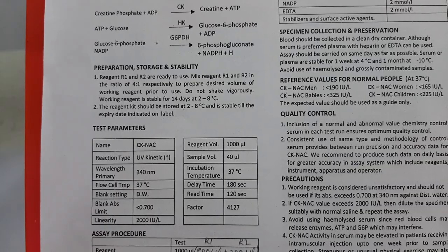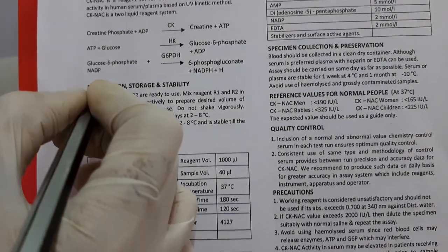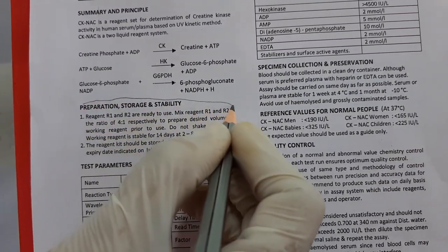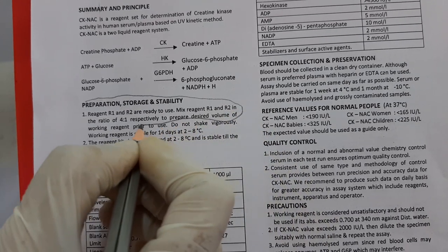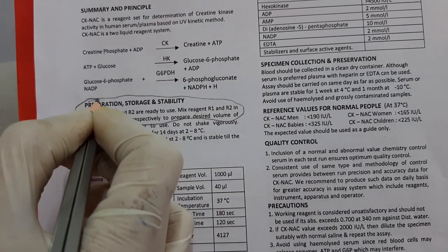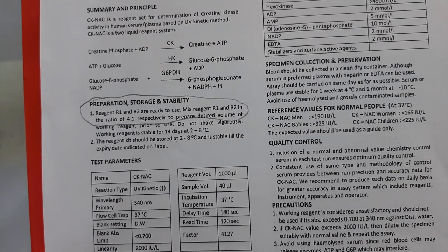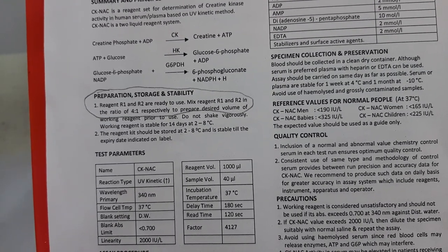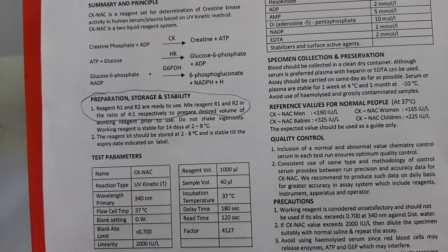Now before looking at the procedure, first let's pay attention to the preparation of working solution. Because CK-NAC is a double reagent system, the working solution is prepared by mixing 4 volumes of R1 with 1 volume of R2.